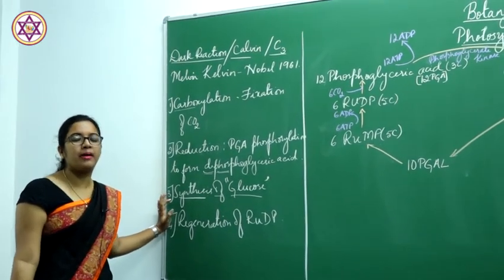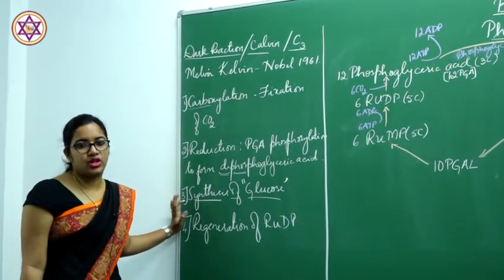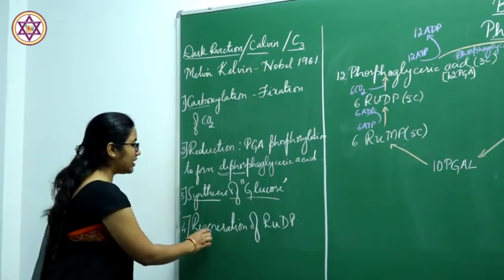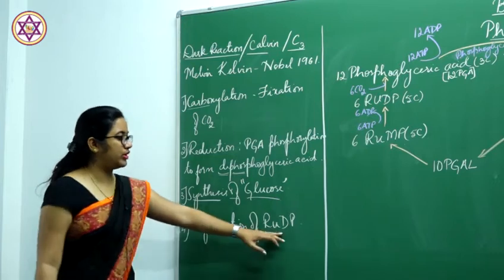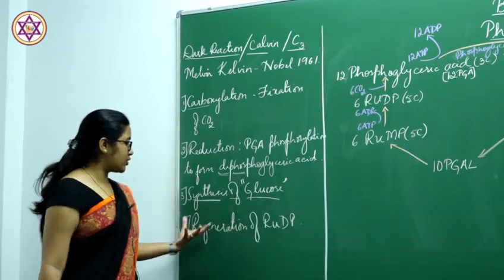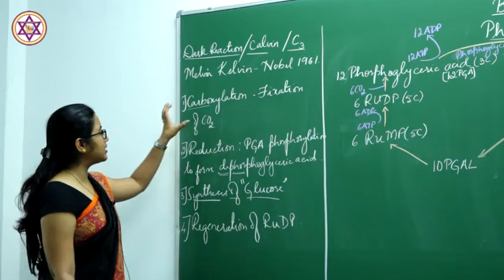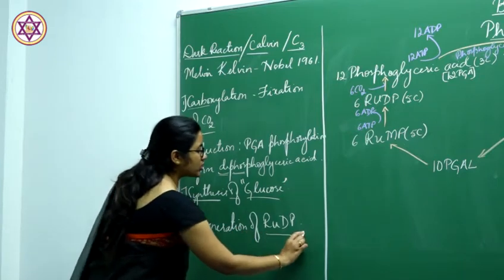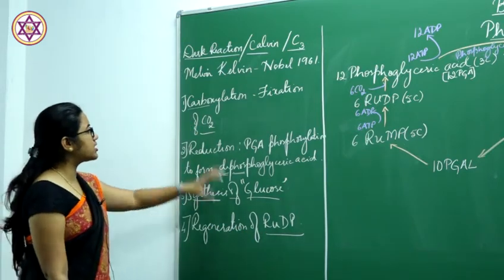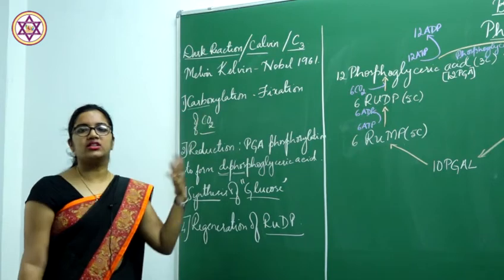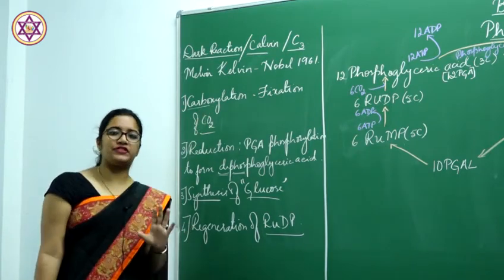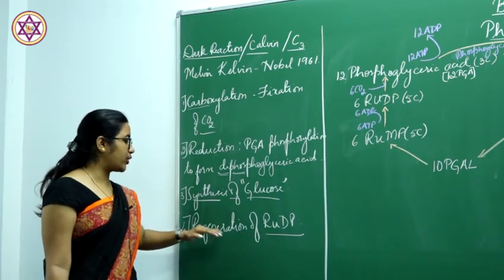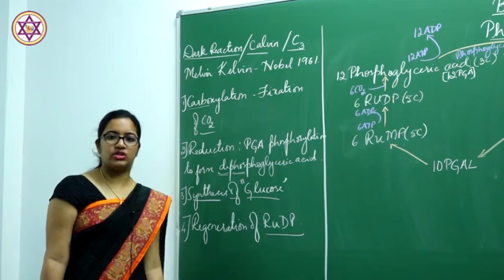The light reaction were mere carriers of electrons and producers of energy. The last step is regeneration of RuDP — ribulose diphosphate. Carbon dioxide fixation occurs with ribulose diphosphate, and at the end of the dark reaction we get back the ribulose diphosphate.